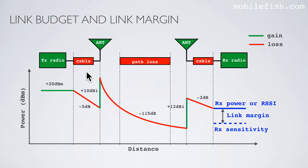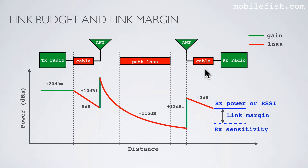A link budget is a sum of all of the gains and losses from the transmitter, through the medium, to the receiver, in a telecommunications system. It is a way of quantifying the link performance.